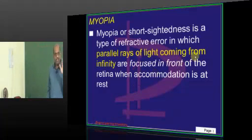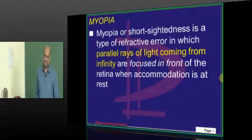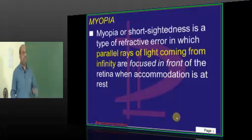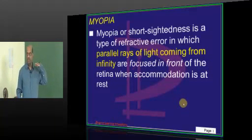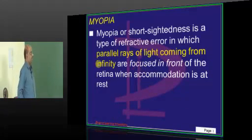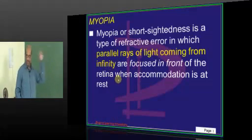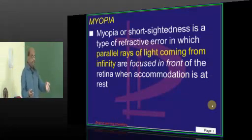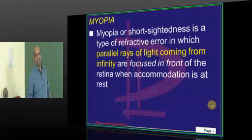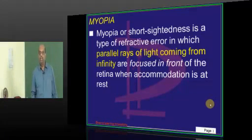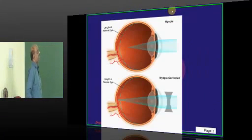Myopia is short-sightedness, which is the refractive error where parallel rays of light coming from infinity are focused in front of the retina instead of falling on the retina. That is typically myopia.